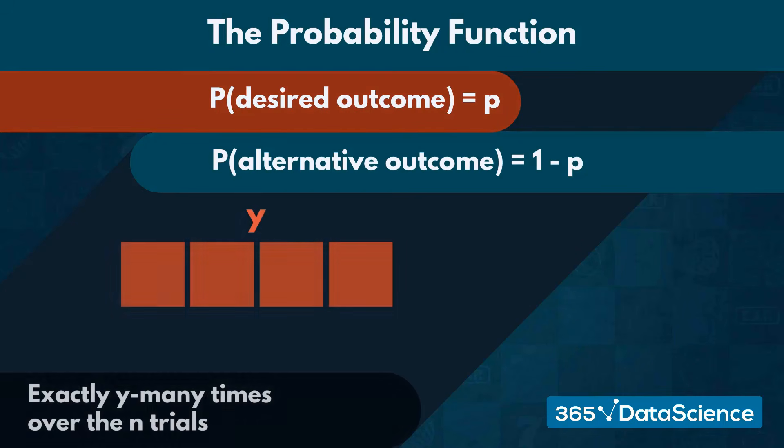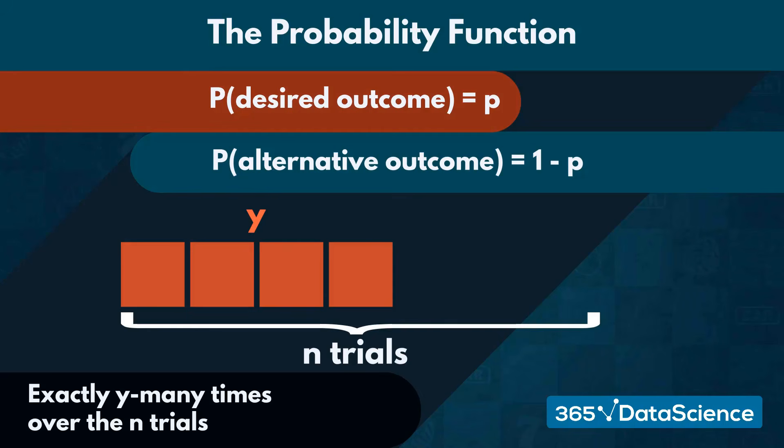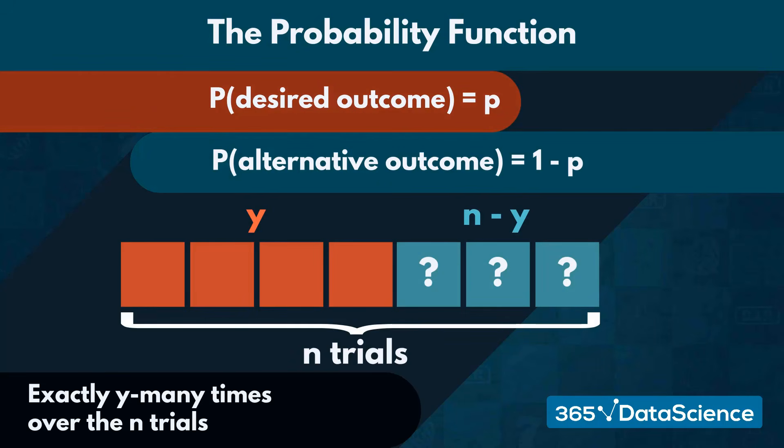In order to get our favored outcome exactly Y many times over the N trials, we also need to get the alternative outcome N minus Y many times. If we don't account for this, we would be estimating the likelihood of getting our desired outcome at least Y many times.